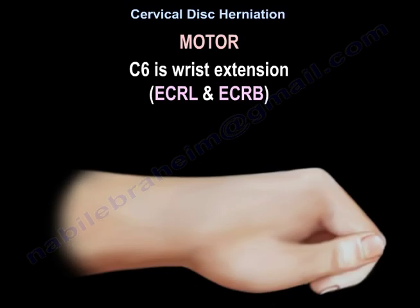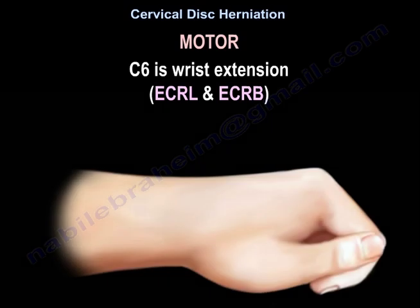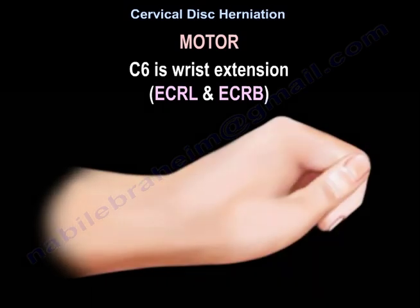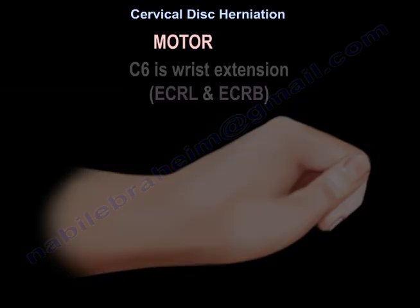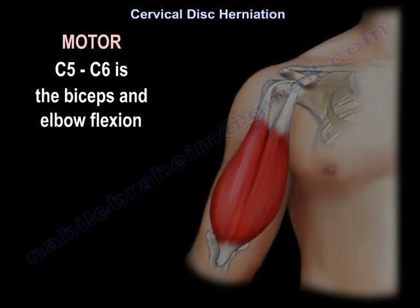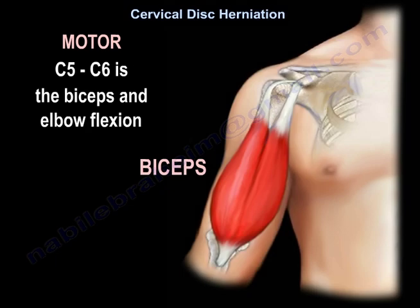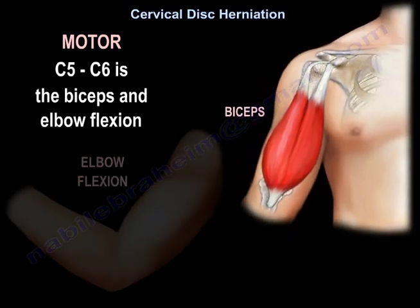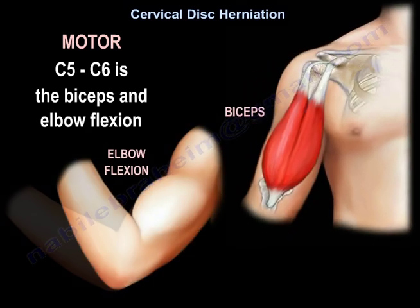As for the motor, C6 involves wrist extension — extensor carpi radialis longus and brevis — and C5-C6 controls the biceps and elbow flexion.